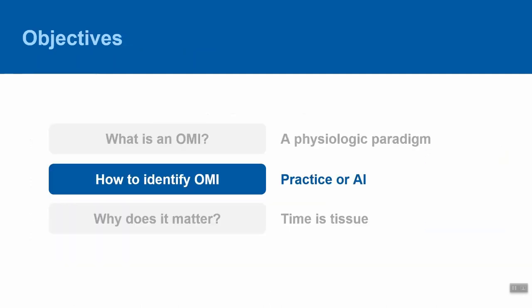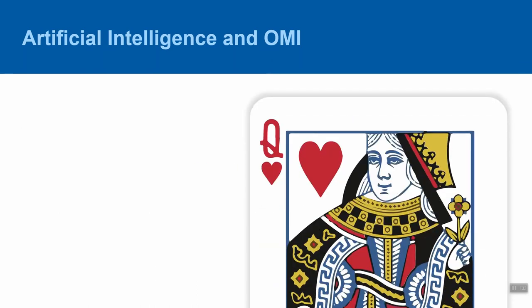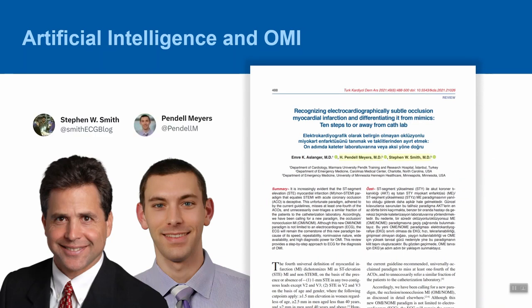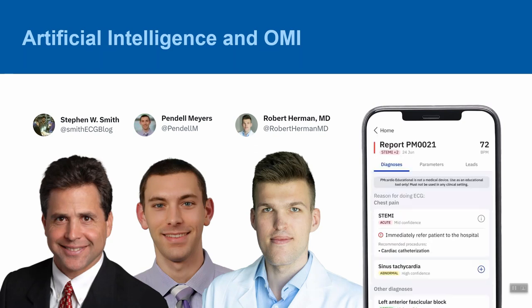Returning to our objectives, we've seen that OMIs are a physiologic paradigm, that time is tissue, and that some findings can be subtle and require practice. Another way to identify OMIs is using artificial intelligence. A recently published paper states that accurate diagnosis of acute coronary syndrome is probably the main challenge of deep learning AI systems. One of the first solutions may be the Queen of Hearts — an AI model trained by OMI experts Dr. Smith and Dr. Myers in collaboration with Powerful Medical, which developed PM Cardio: an application that lets you upload a picture of an ECG and receive immediate feedback about whether it detects underlying acute ischemia.